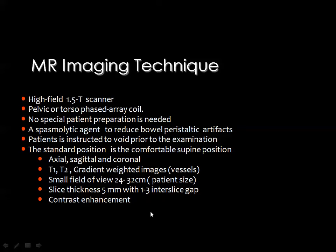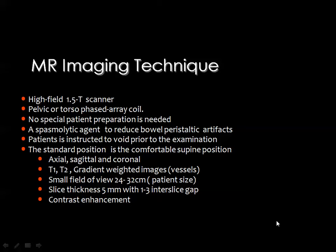The standard position is supine and we use all available pulse sequences including T1, T2, and gradient images in axial, sagittal, and coronal planes. We select the field of view suitable for the patient size and scan at 5 mm slice thickness with about 2 mm inter-slice gap. Contrast material injection is often needed. It is better to examine the female patient in the second half of the menstrual cycle, and vaginal tampons may be used when examining the cervix and vagina.